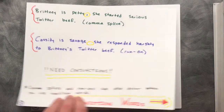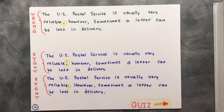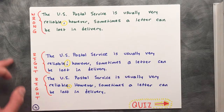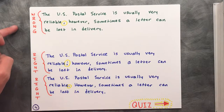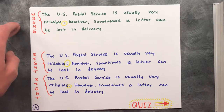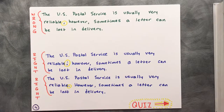Comma splices and run-ons can also occur when you use transition words. For example: 'The U.S. Postal Service is usually very reliable, however, sometimes a letter can be lost in delivery.'